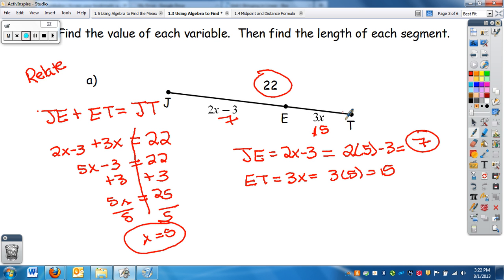Either way, and again, you could have done ET first, and then you could figure out what JE is. And this is a good way to check to see if we did it right, because 7 plus 15 is 22.